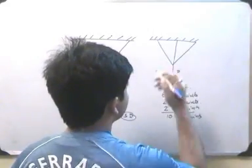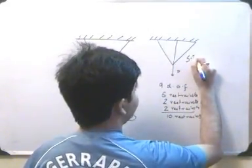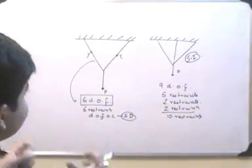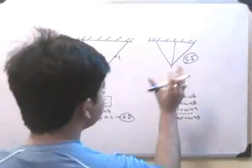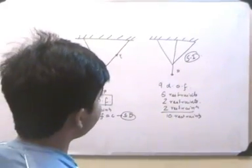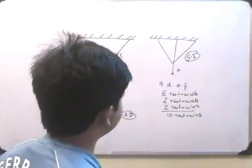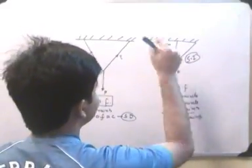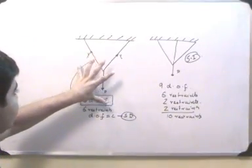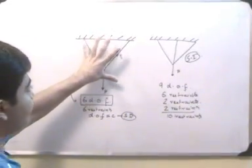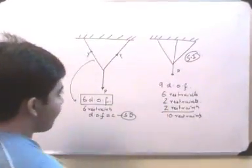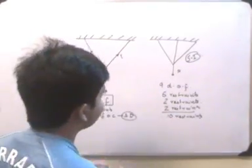Essentially I have ten restraints for this body. Since the degrees of freedom are less than the number of restraints, this structure is a statically indeterminate structure. The whole concept of plastic design comes from this statically indeterminate structure. If we take out some of the restraints — for example, eliminate one bar — the body remains in equilibrium and can take load. So that bar is one redundant member.